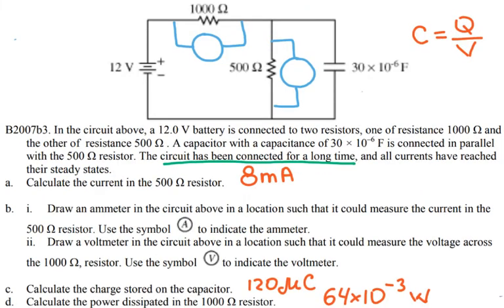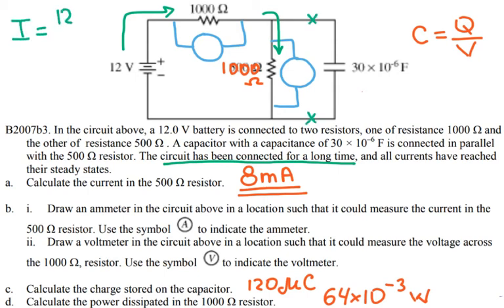When you connect a larger resistor — say 1000 ohms — instead of the 500-ohm resistor, the total resistance increases so the current drops. Before it was 8 milliamps; now it will be less. Once steady state is reached, the capacitor is again disconnected from the circuit, so current equals 12 volts divided by the total resistance — now 2000 ohms — giving a smaller current.